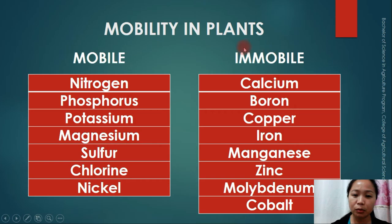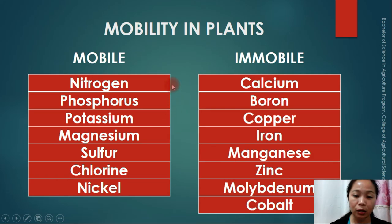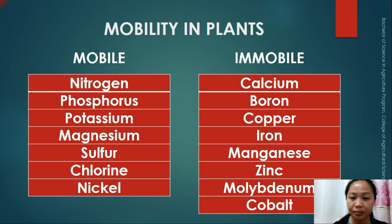Here are the two categories of mobility in the plant. Mobile nutrients include nitrogen, phosphorus, potassium, magnesium, sulfur, chlorine, and nickel. Immobile nutrients include calcium, boron, copper, iron, manganese, zinc, and cobalt. Note that only calcium among the macronutrients is actually immobile in plants; the other macronutrients — nitrogen, phosphorus, potassium, magnesium, and sulfur — are mobile in plants.